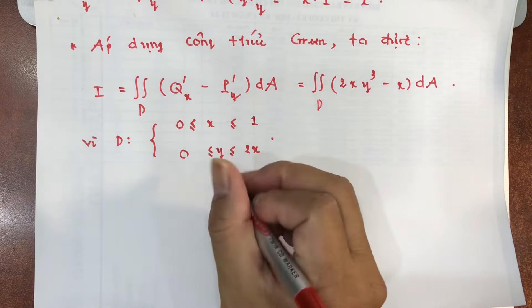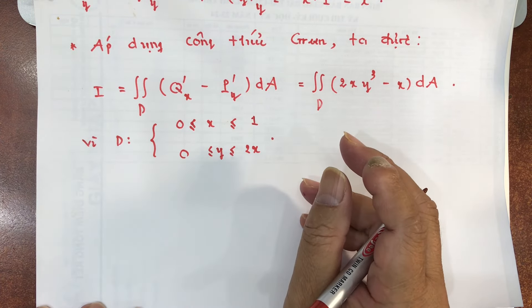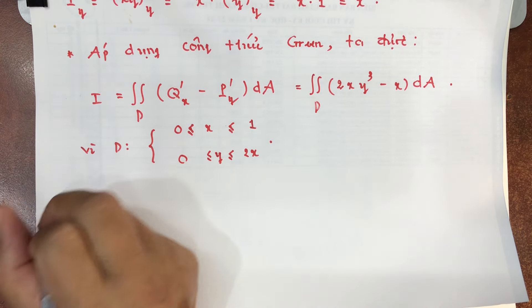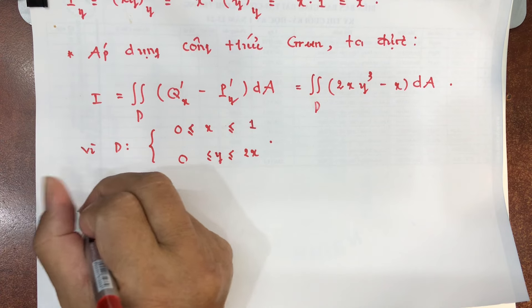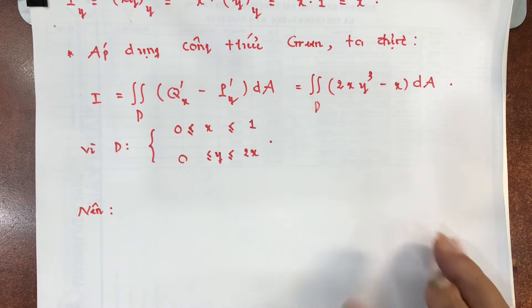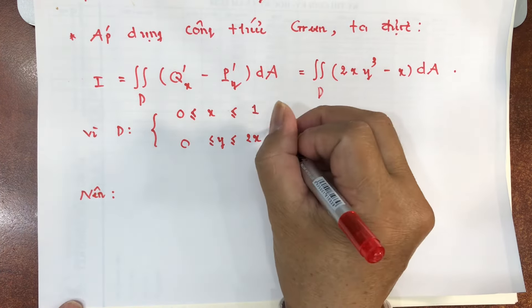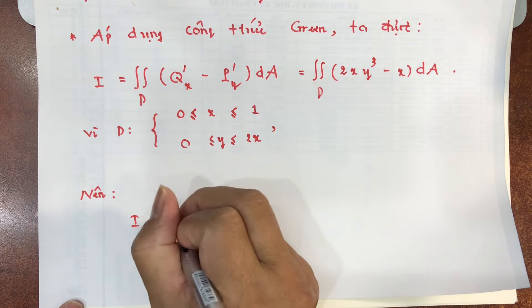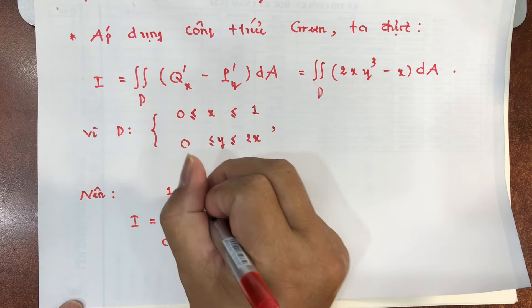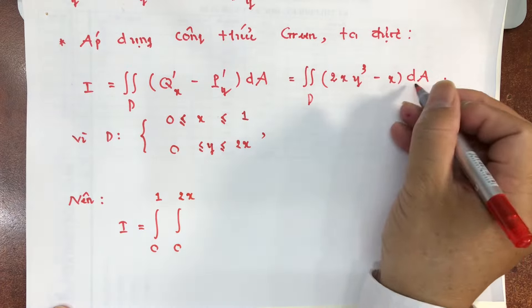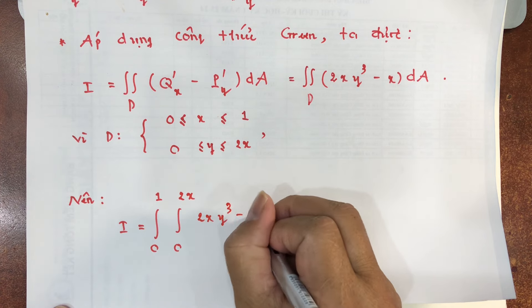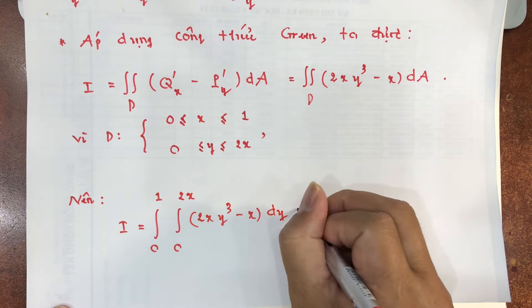Ráp cận vào: tích phân từ 0 tới 1, tích phân từ 0 đến 2x, hàm số (2xy³ − x) dy dx.